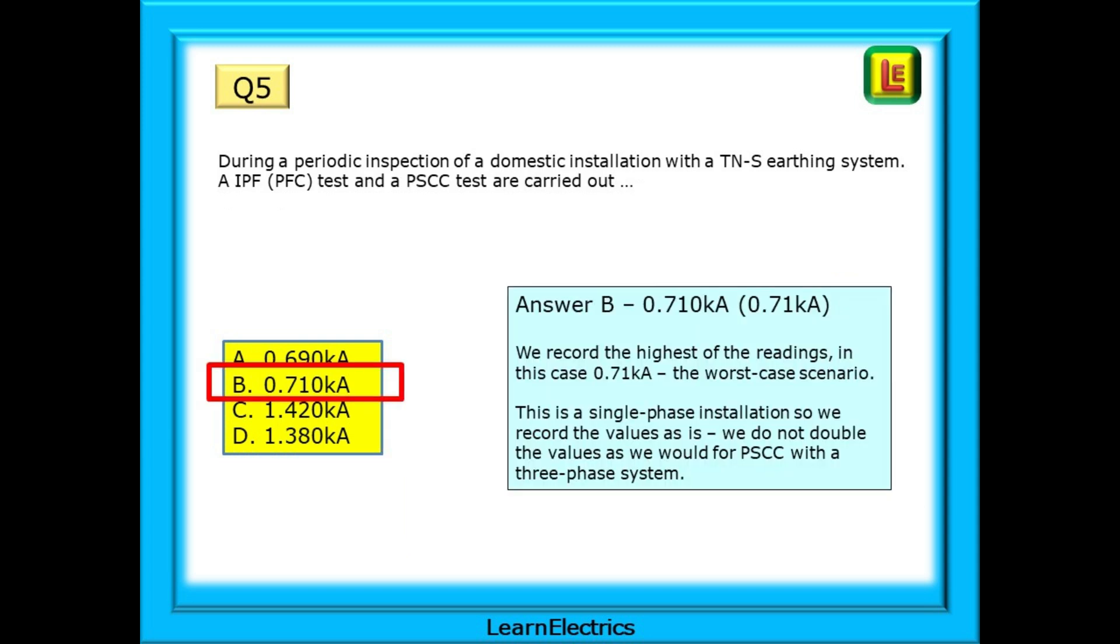The answer is B, 0.710 kiloamps, shown as 0.71 kiloamps on some test meters. We record the highest of the readings, in this case 0.71 kiloamps, the worst case scenario.